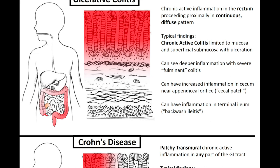The chronic active colitis of ulcerative colitis is limited to the mucosa and superficial submucosa with ulceration. You can see deeper inflammation with severe fulminant colitis. There can be increased inflammation in the cecum near the appendiceal orifice — the cecal patch — and inflammation in the terminal ileum known as backwash ileitis.